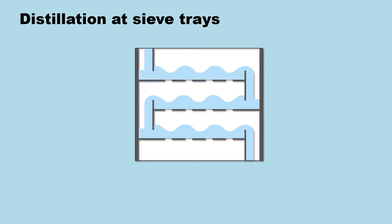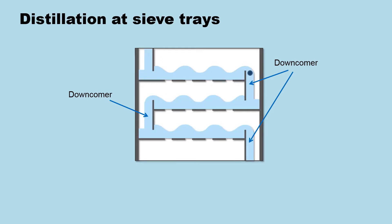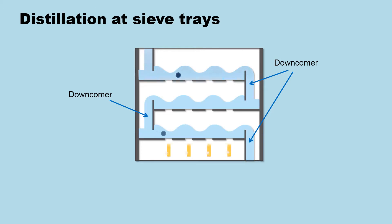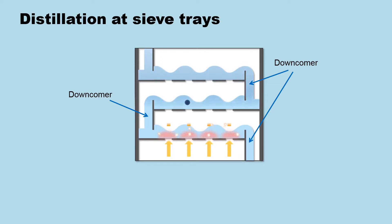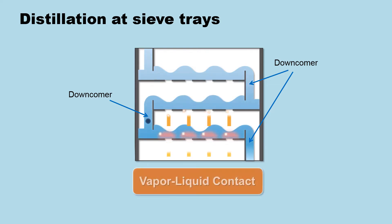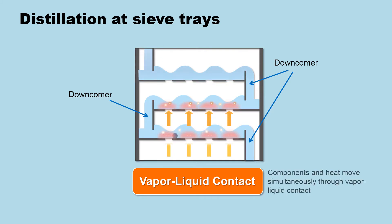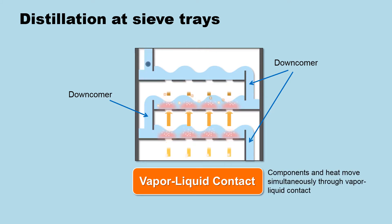This diagram shows the mechanisms of distillation inside the column. Liquid moves through the sieve trays while overflow liquid goes down to the lower trays through the downcomer. At the same time, high-temperature vapour comes up through the sieve trays, making contact with the liquid flowing on the upper trays. This is called a vapour-liquid contact where components and heat move simultaneously.